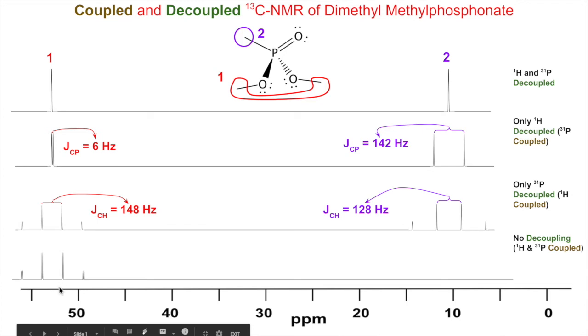The quartet has been doublified—you can also call this a quartet of doublets. Over here this one got pretty complicated because the coupling constants between 142 and 128 are pretty close. Here there's a big difference—148 and 6—it's easy to see.